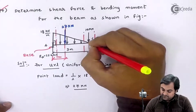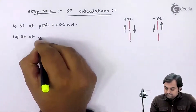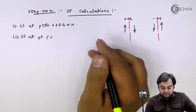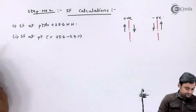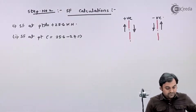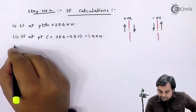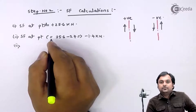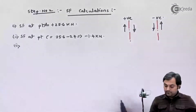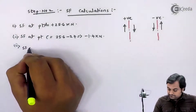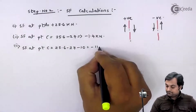Taking the section to the left of C: SF at C = 25.6 − 27 = −1.4 kilonewton. Taking the section to the right of C gives SF = −11.4 kilonewton, accounting for the additional 10 kilonewton point load at C.